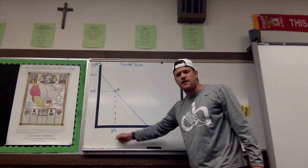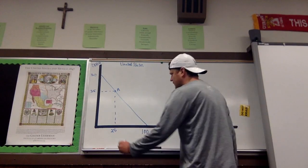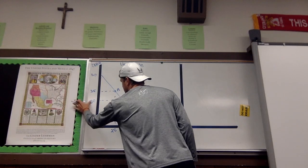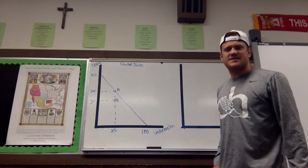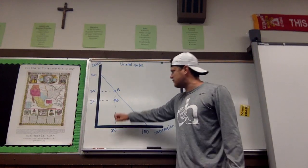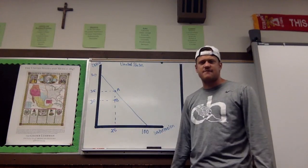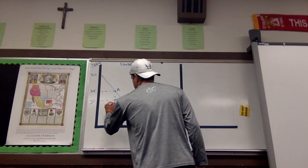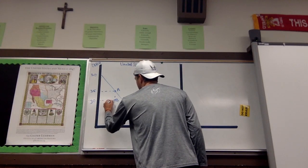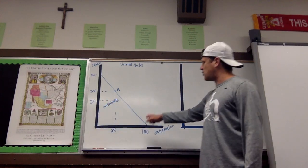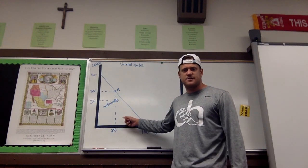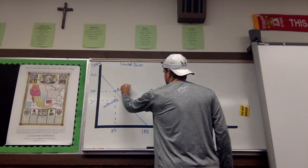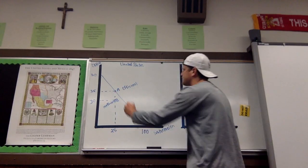What happens if we produce 25 watermelon but only 30 corn instead of 35 at point B? We would say that point B is inefficient, because at 25 watermelon we should be able to produce 35 units of corn in this economy, but we're only producing 30 at point B. All of the points below the curve are going to be inefficient, while all points along the curve are efficient.